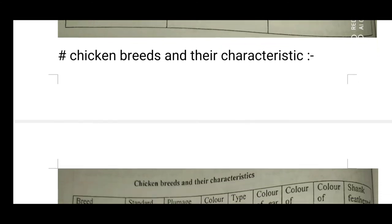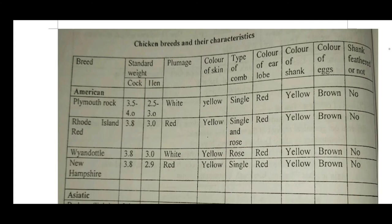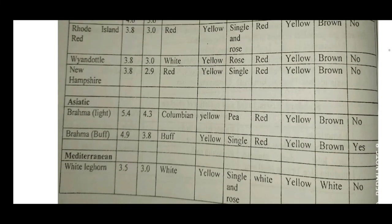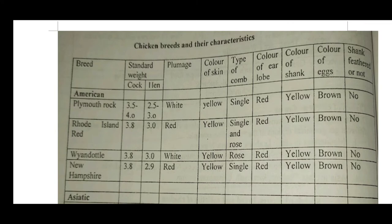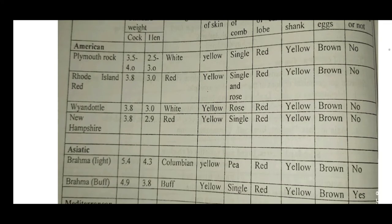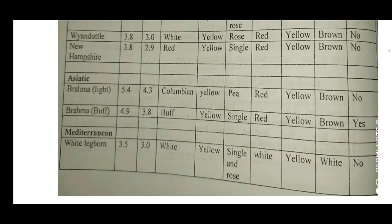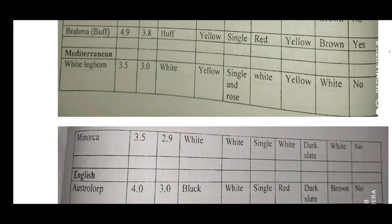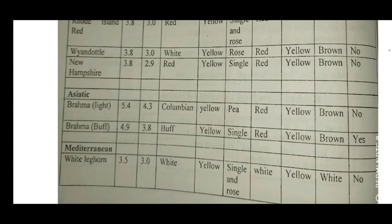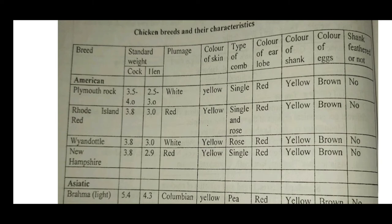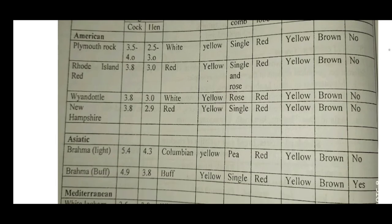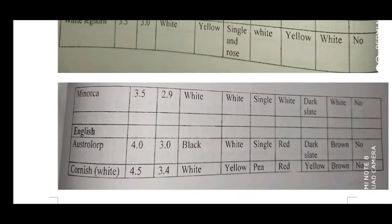Chicken breeds and their characteristics: American breeds include Plymouth Rock, Rhode Island, White Hotel, and New Hampshire. Asiatic breeds include Brahma, Light Brahma, and others. Mediterranean breeds include White Leghorn and Monarca. English breeds include Australorp, Cornish White. Key characteristics assessed include body weight, skin color, type of comb, color of earlobe, shank color, color of egg, and whether the shank is feathered or not. These are important from an exam point of view.